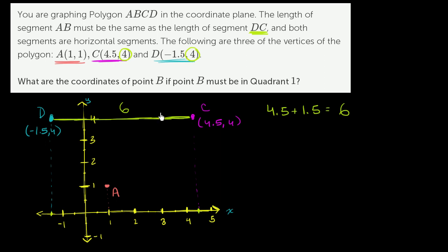You can just take your end point, your end horizontal value, your end x value. From that you can subtract your starting x value. So you subtract negative 1.5. This of course is equal to 4.5 plus positive 1.5, which once again is equal to 6.